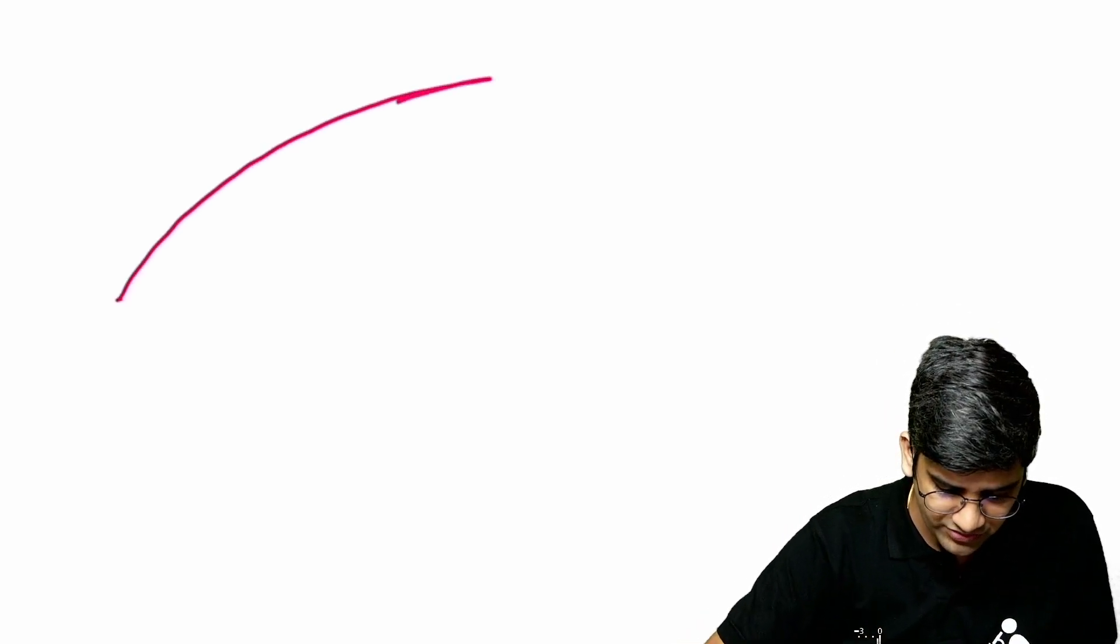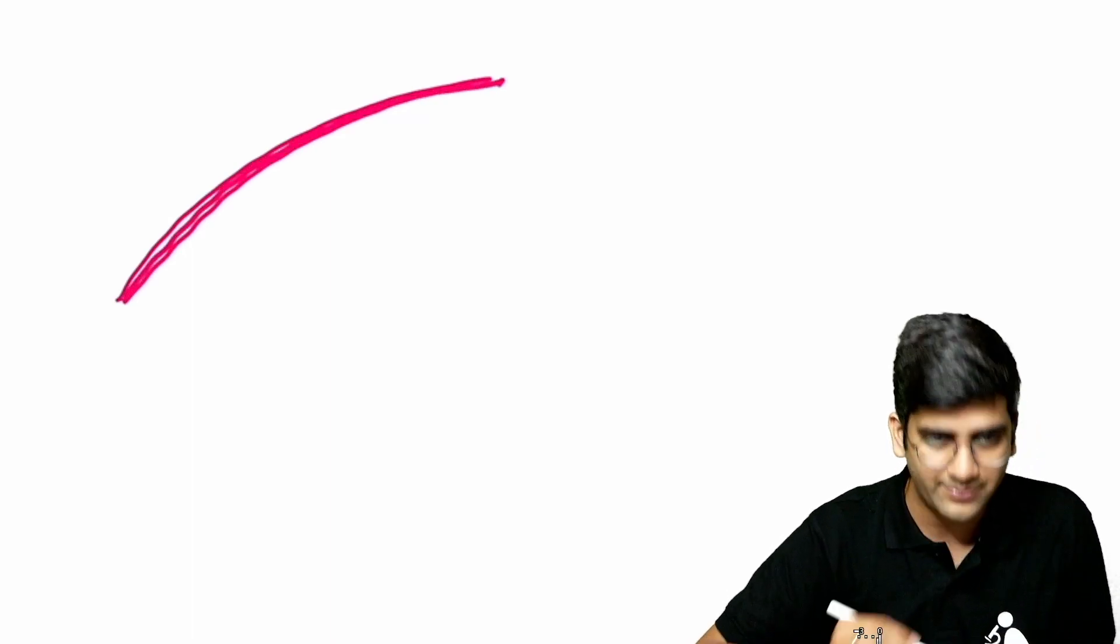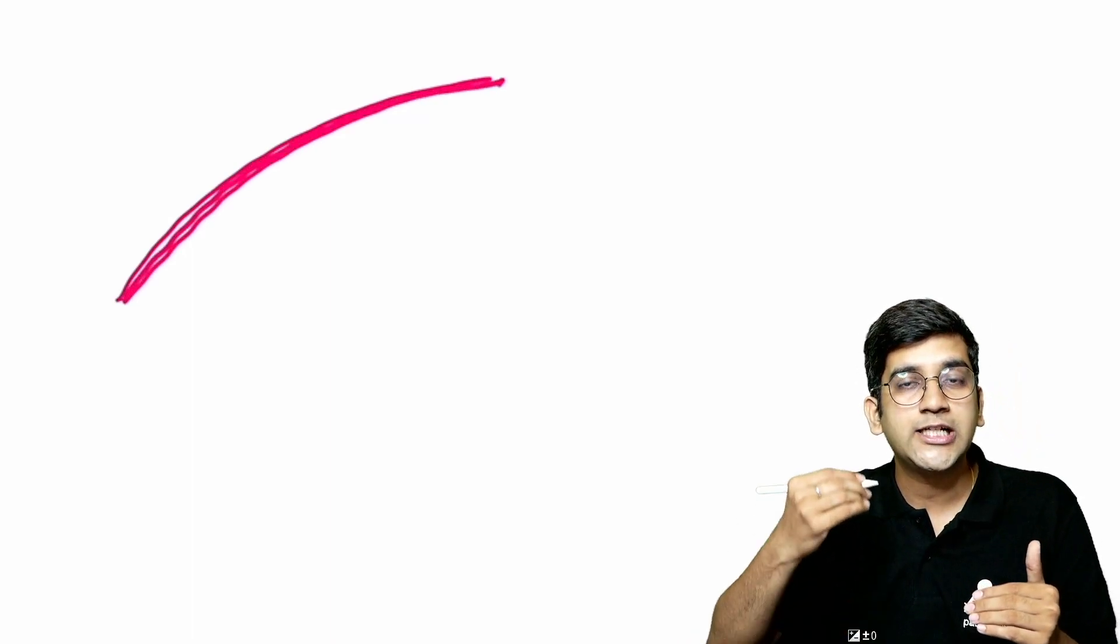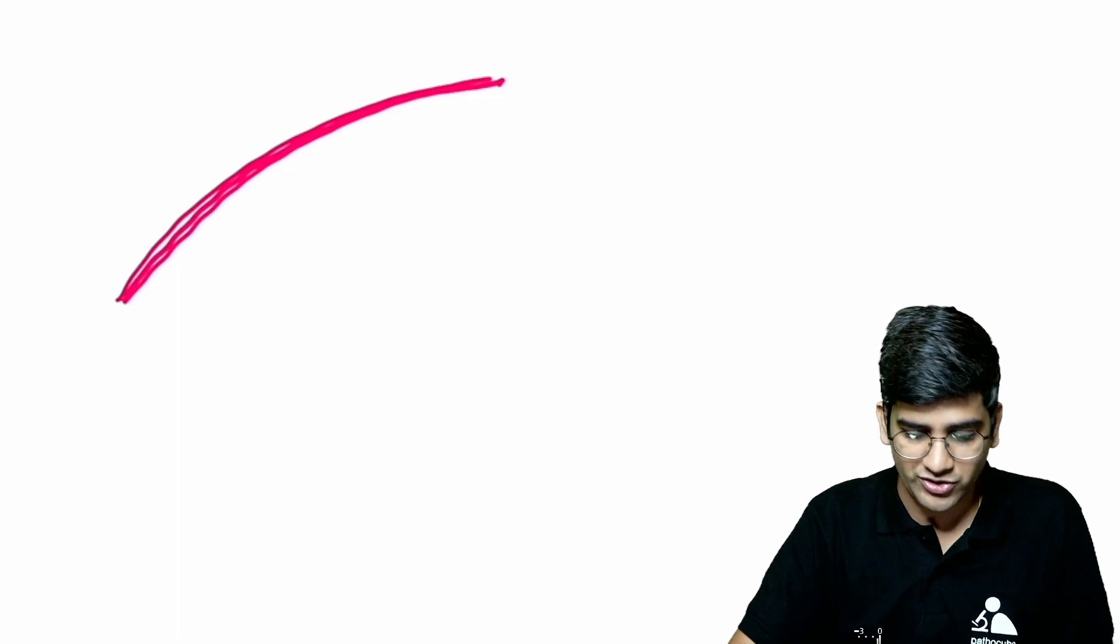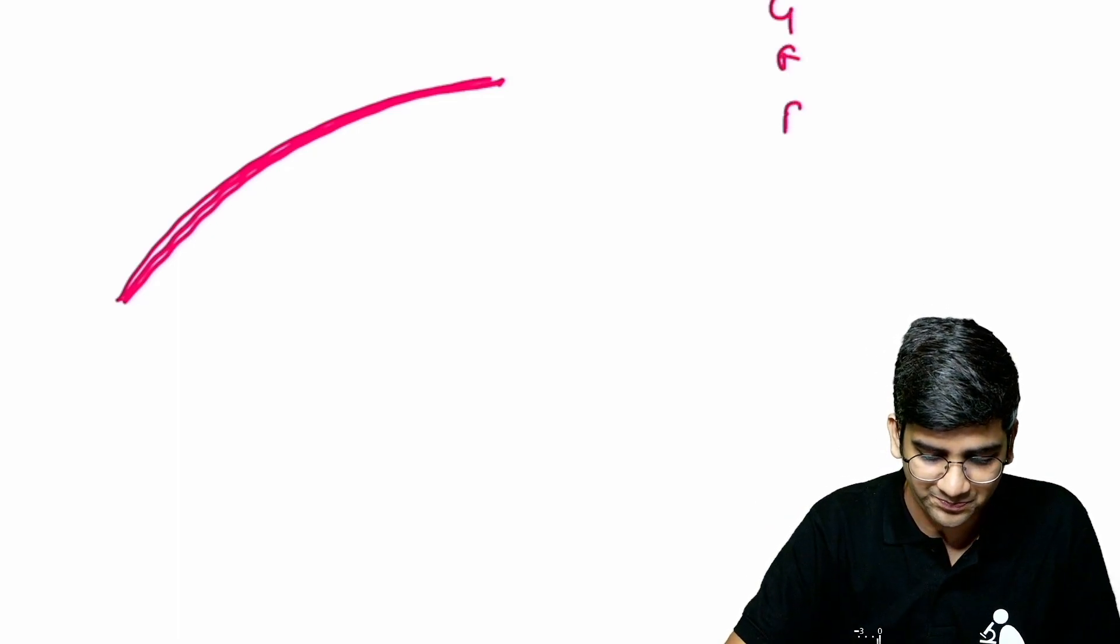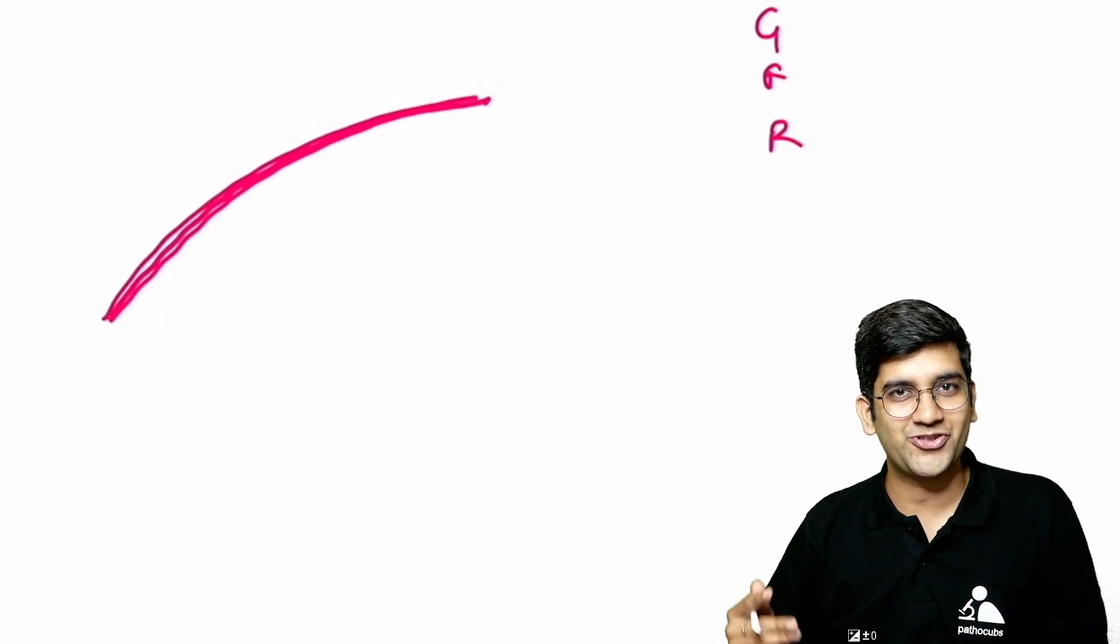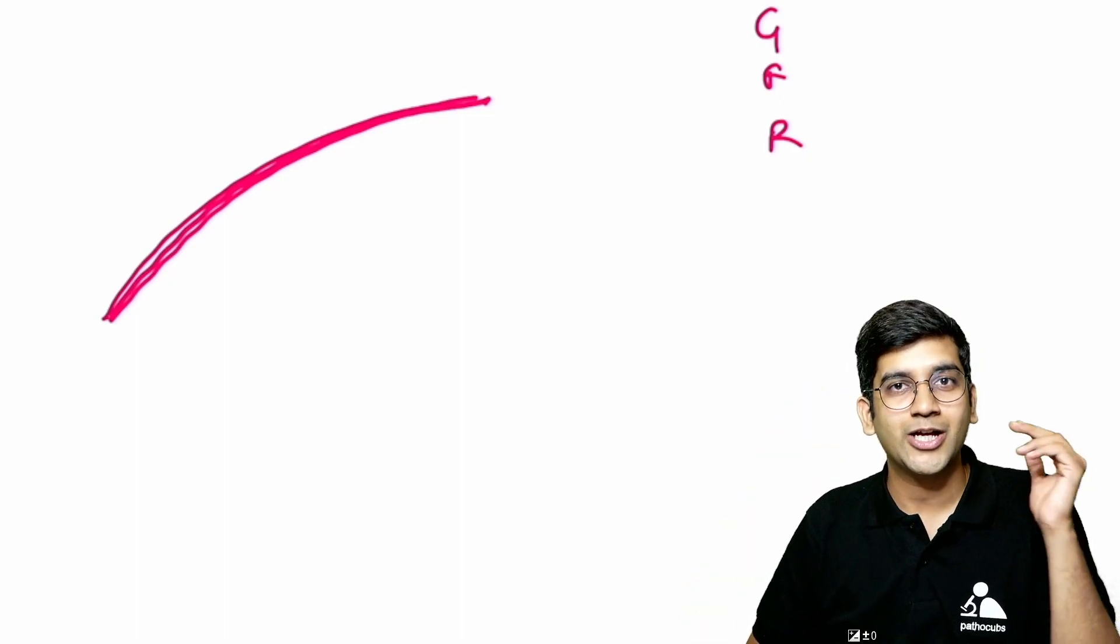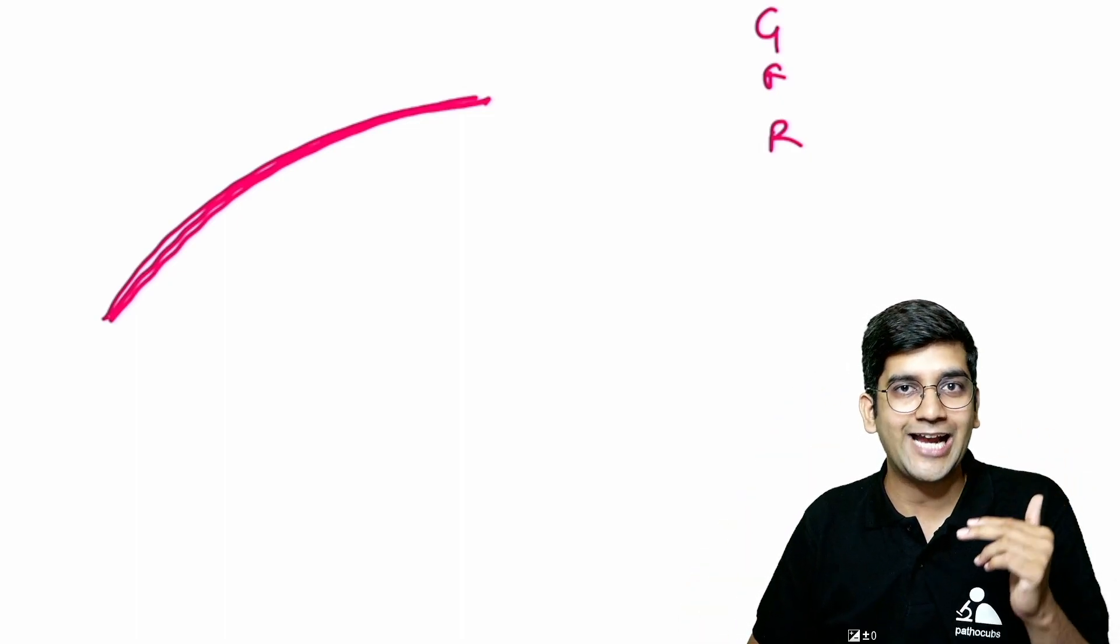So adrenal cortex has an extremely thin capsule here. The adrenal gland will have a capsule here. Below the capsule the first layer is your glomerulosa. You will never forget this. GFR. The mnemonic which you have been reading from the first year of MBBS. Glomerulosa, fasciculata and reticularis.